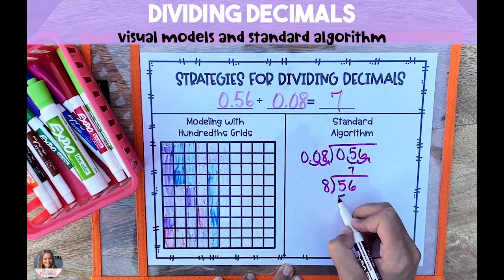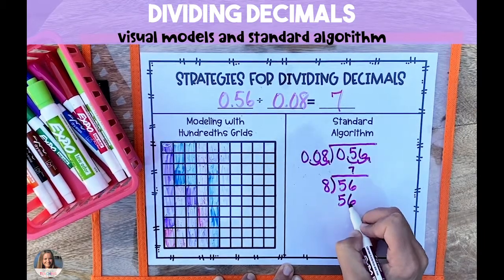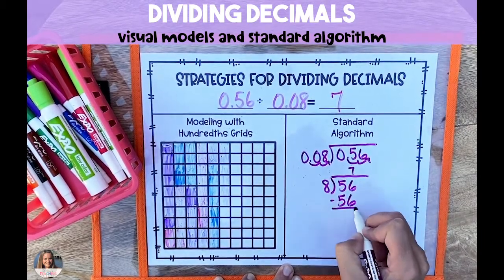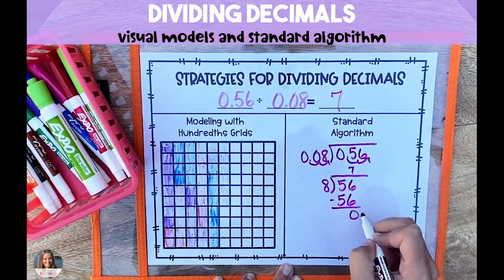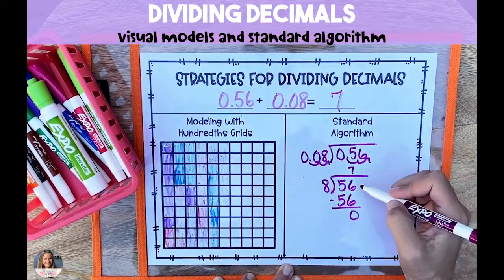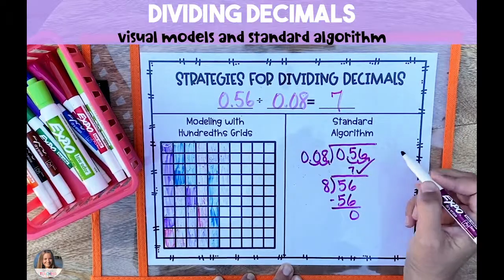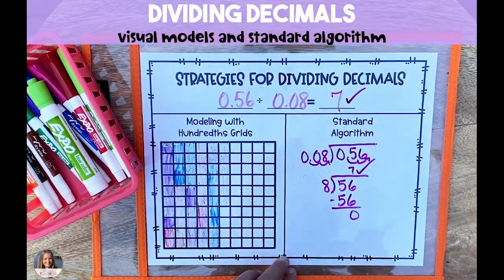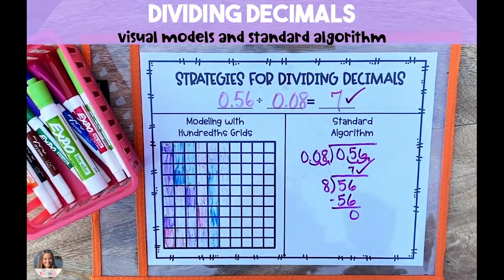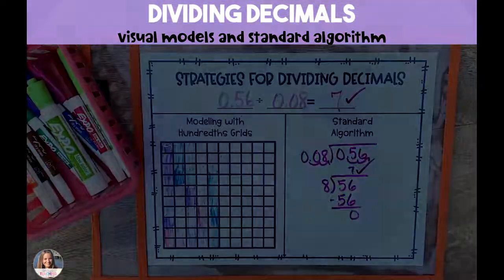And in this case, we now have 56 divided by 8, which is 7. The answer to our standard algorithm matches the answer to our visual model.